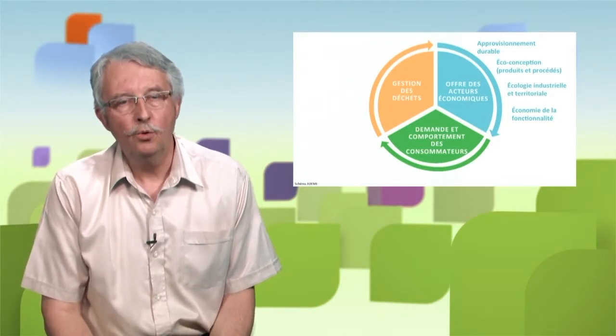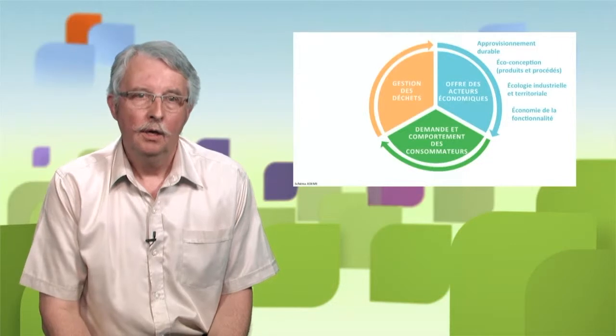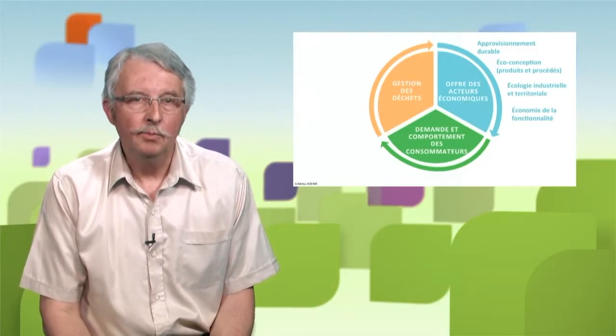The second pillar is eco-design, about products and processes. We need to design by taking into account all environmental impacts and, more specifically, the use of resources and raw materials, but also taking into account all environmental impacts so as not to transfer some of those impacts to other parts of the environment.